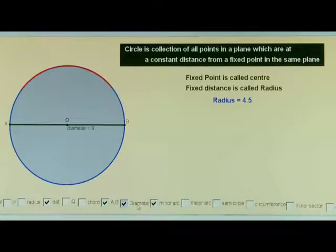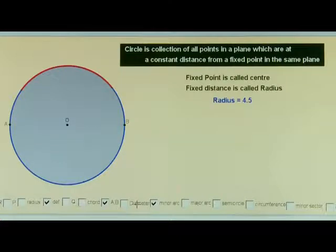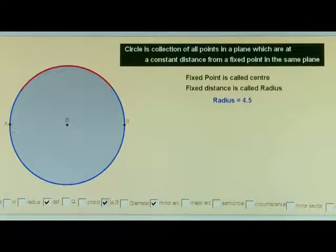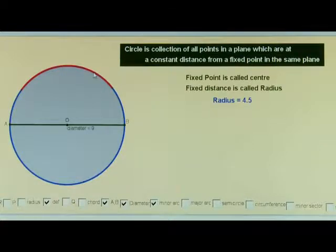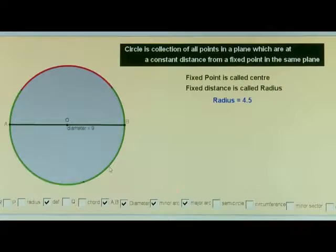Observe this red portion of the circle. This red portion is known as an arc. The diameter divides the circle into two parts. The red portion, which is less than half of the circle, is known as the minor arc. The portion of the circle which is more than half of the circle, shown by green color, is known as the major arc.